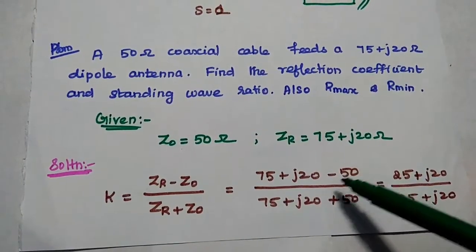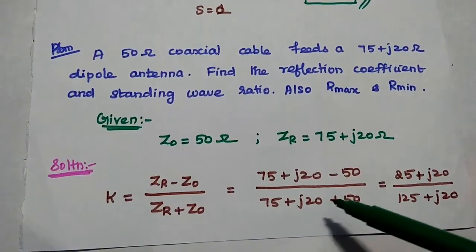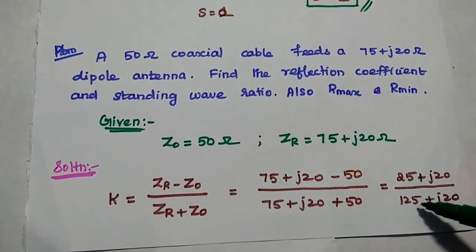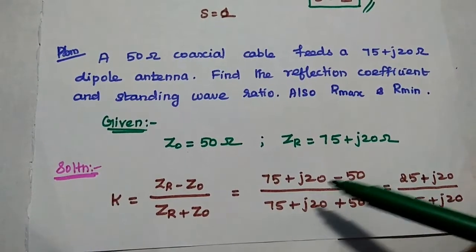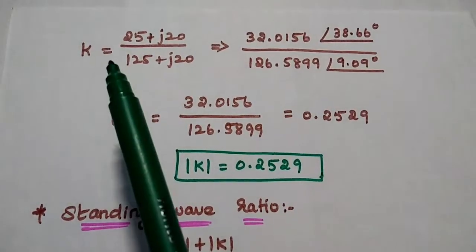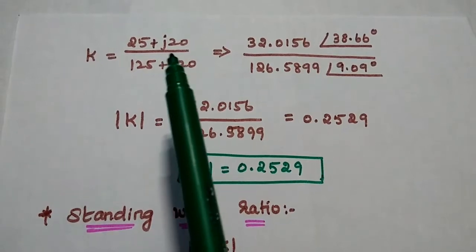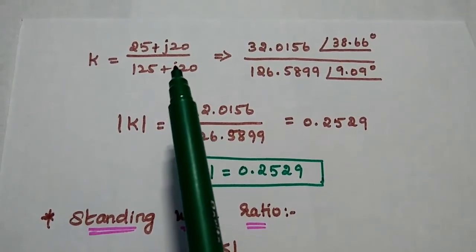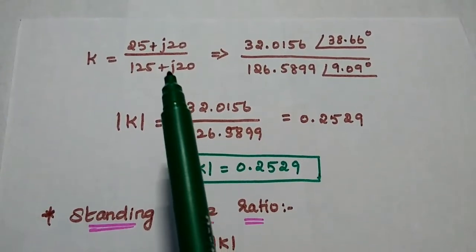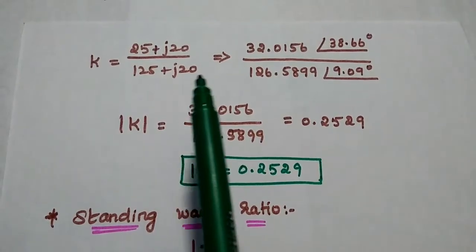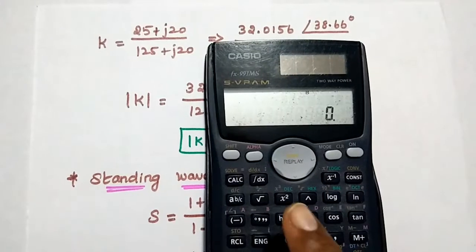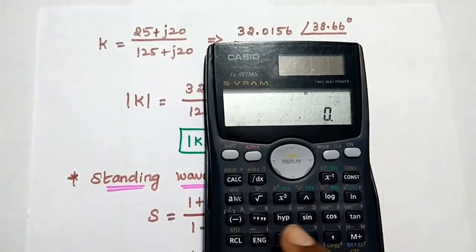Substituting: 75 plus J20 minus 50 divided by 75 plus J20 plus 50. We get 25 plus J20 divided by 125 plus J20. Subtracting and adding the real terms gives K equal to 25 plus J20 divided by 125 plus J20. This is in rectangular form, and we cannot use rectangular form for division, so we have to convert this rectangular form into polar form using a calculator.